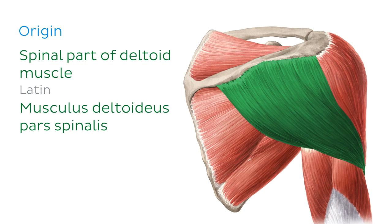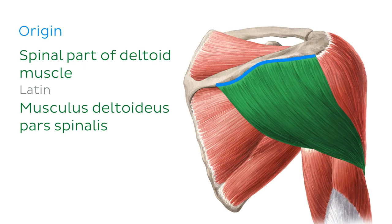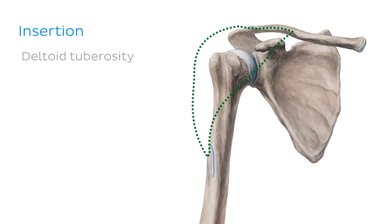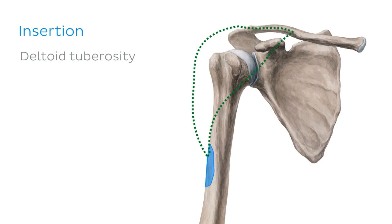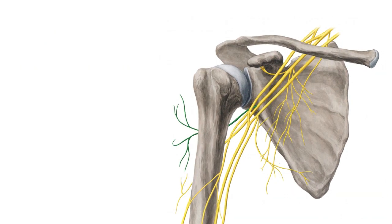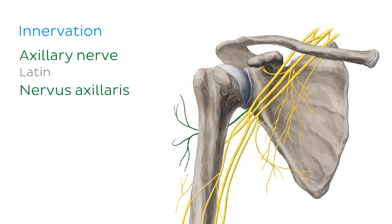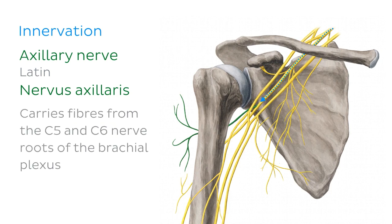Finally, we have the spinal part, which, true to its name, originates from the spine of the scapula. These three parts converge towards their insertion point, which is the deltoid tuberosity, found on the lateral surface of the shaft of the humerus. In order for the deltoid muscle to carry out all these movements, it needs a nerve to tell it what to do and when. This muscle is innervated by the axillary nerve, which we can see here highlighted in green. The axillary nerve carries fibres from the C5 and C6 nerve roots of the brachial plexus.